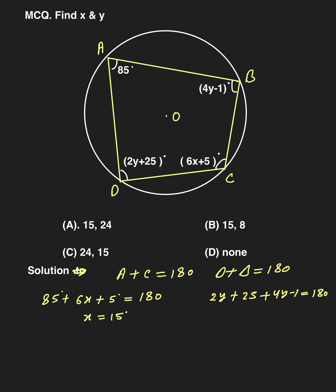So 6y plus 24 equals 180. Therefore, 6y equals 180 minus 24.